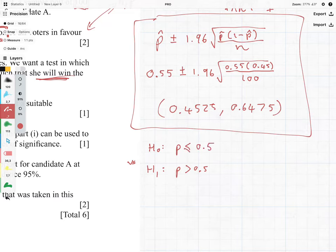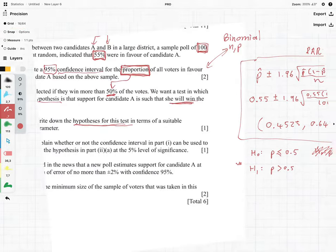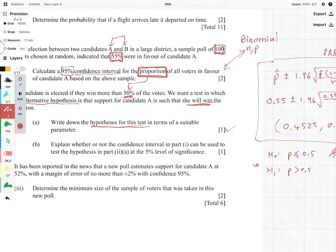I mean theoretically you could put H as equal to 0.5, but it's nicer to do it this way because you're saying the null hypothesis is that she doesn't win, the alternative hypothesis is that she does win. So that should have been quite straightforward, a nice easy mark.